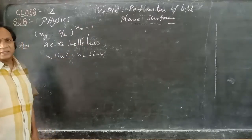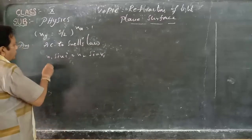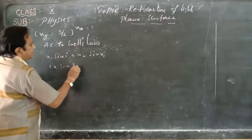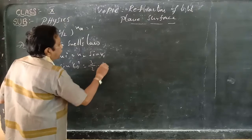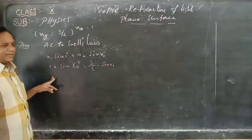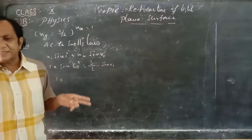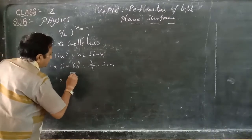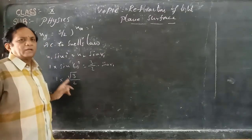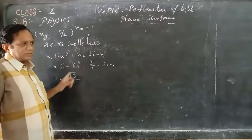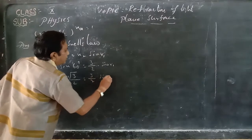The refractive index of air is 1 — remember, that constant value is 1 even if not given. So: 1 × sin(60°) = (3/2) × sin(R). The value of sin 60° is √3/2, so we have √3/2 = (3/2) × sin(R).